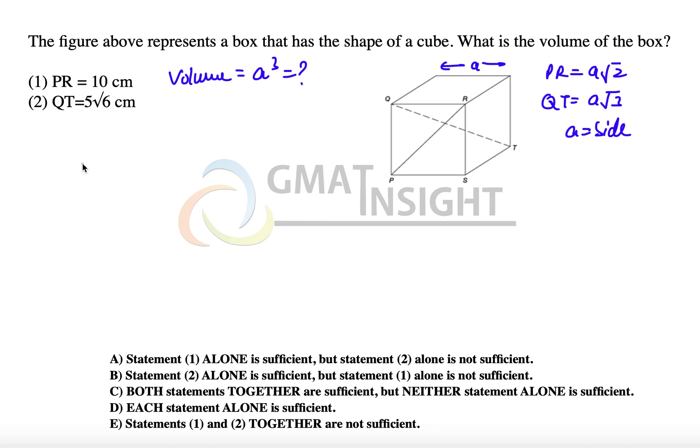Let's check the first statement. The first statement says that PR, which is equal to A root 2, is equal to 10. That means we know that A is equal to 10 over root 2, which means it is equal to 5 root 2. So, we can find out the volume very comfortably, which is equal to 5 root 2 cube and that is 250 root 2. So, the first statement alone is sufficient to answer the question.